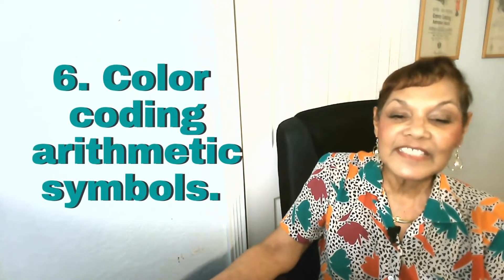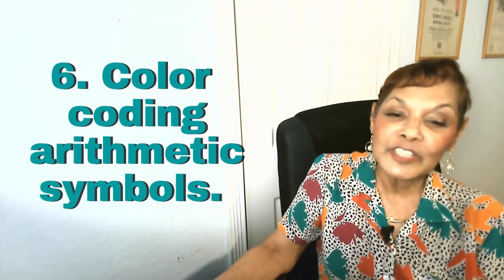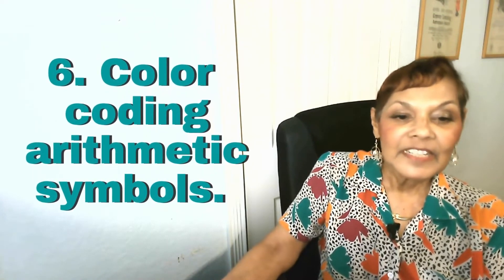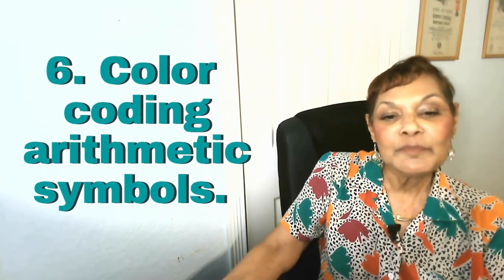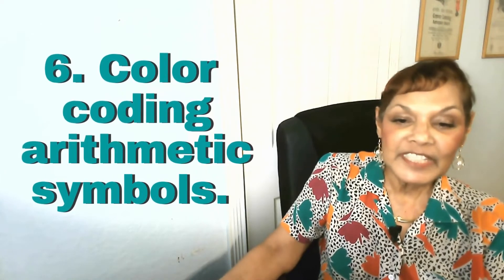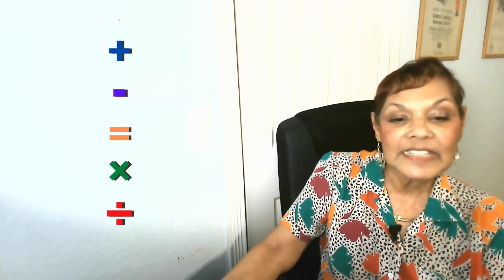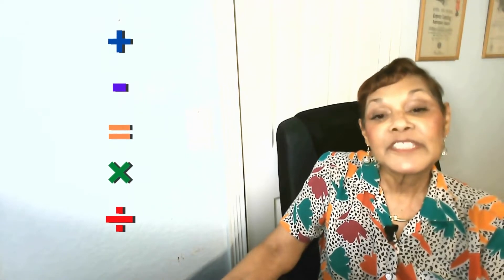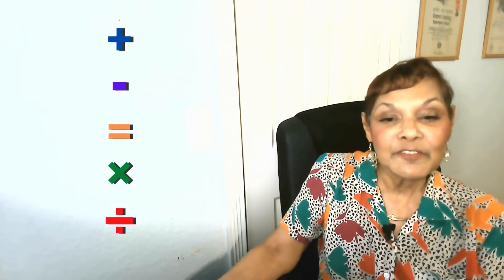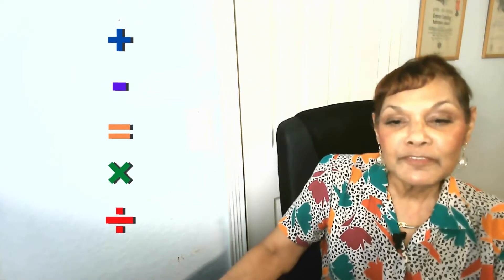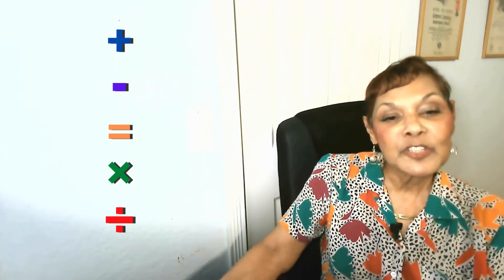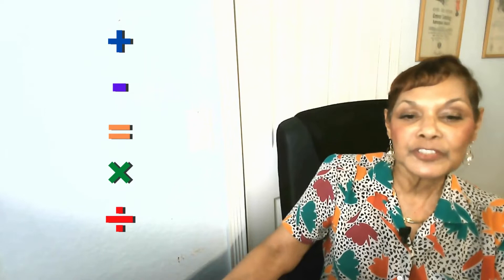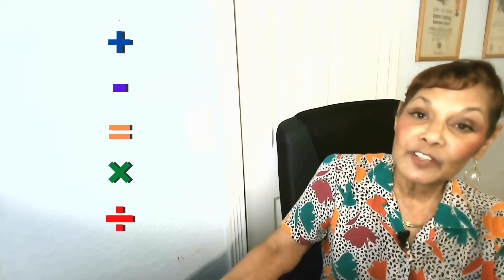Number six: color-coding arithmetic symbols. Color-code basic arithmetic symbols such as plus, minus, equal, multiply, and divide by providing visual cues for children when they are computing numbers.